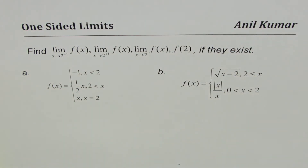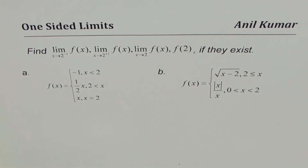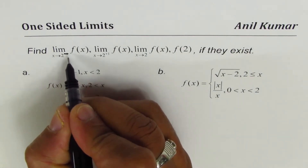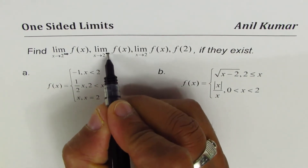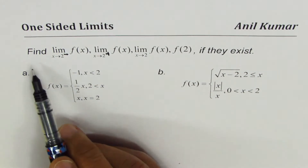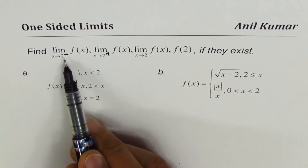I'm Anil Kumar. On request of my subscribers, I'm sharing with you a couple of videos on one-sided limits. In this particular video, we have taken piecewise functions as an example. The question is: find the limit when x approaches 2 from the left side — indicated by the minus superscript — and find the limit when x approaches 2 from the right side — indicated by the plus superscript.